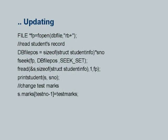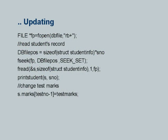SEEK_SET is one of the three flags used in fseek — remember, fseek can set the file position pointer with respect to the beginning of the file, the end of the file, or the current position. This fseek sets the file position with respect to the beginning, represented by SEEK_SET. Consequently I will move the positioning pointer to exactly where I find the record of the desired student. Then I will read the record of that student into structure S — the number of bytes to be read is sizeof(struct student_info), and exactly one such unit is read from fp.